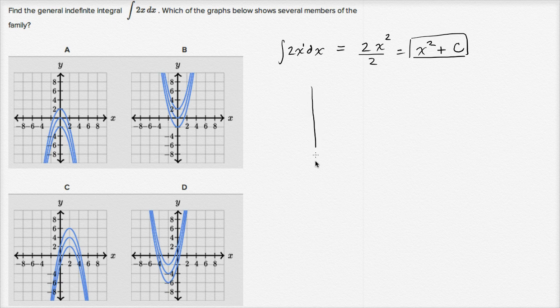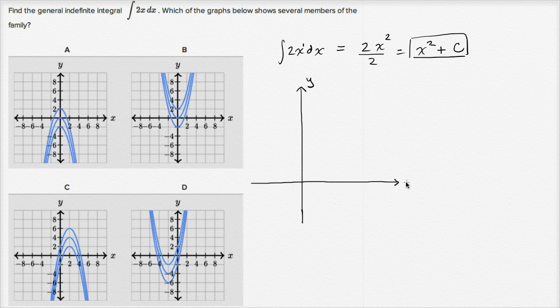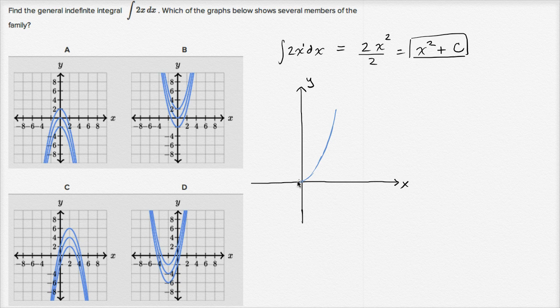So let me draw, I can draw a neater version of that. So slightly better. So if that's my y-axis, and this is my x-axis, we know what y equals x squared looks like. y equals x squared looks like, I'll just draw the general shape. So y equals x squared looks like this.